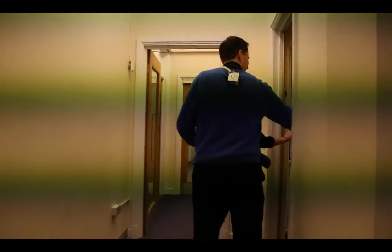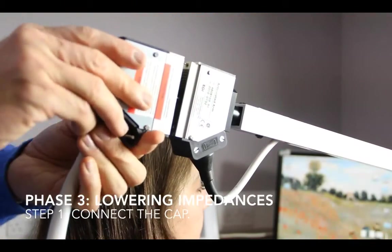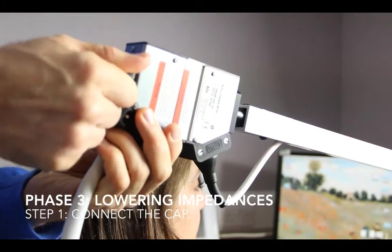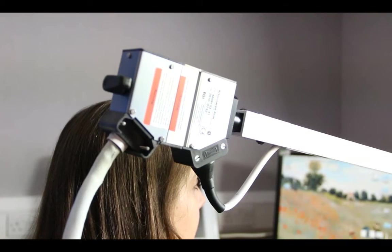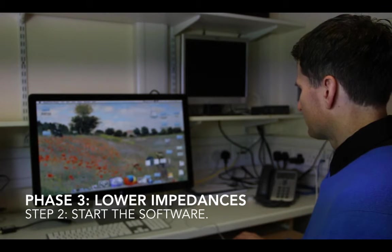The last phase of preparation for recording EEG involves getting the clearest possible signal from each electrode by lowering the impedances. We start by connecting the cap to the electrical recording equipment. Then, we start the software that is going to be used to record the EEG signal.